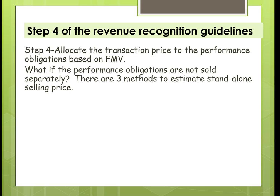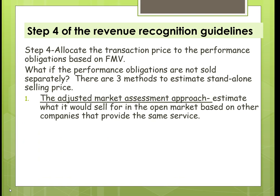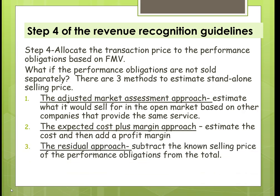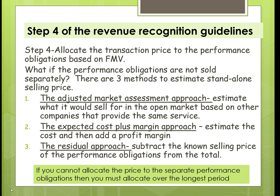Step four: allocate the transaction price to the performance obligations based on fair market value. What if the performance obligations are not sold separately? There are three methods to estimate. First, the adjusted market assessment approach — estimate what it would sell for in the open market based on other companies providing the same service. Second, the expected cost plus margin approach — estimate the cost and add a profit margin. Third, the residual approach — subtract the known selling price of the other performance obligations from the total. If none of this information is available, the total price is allocated based on the longest performance period, such as the life of a service contract.